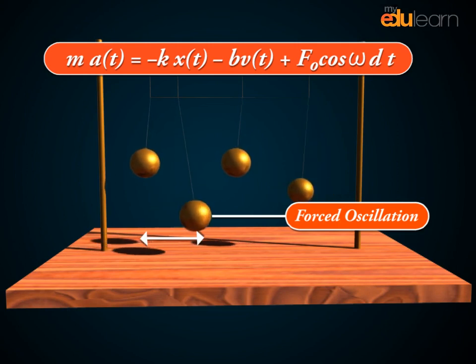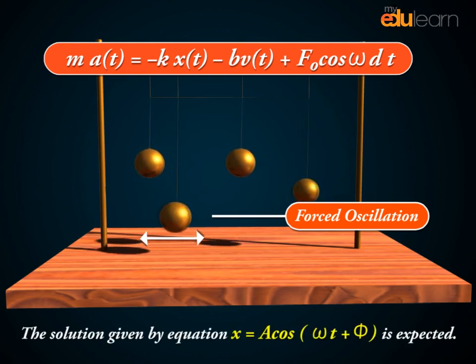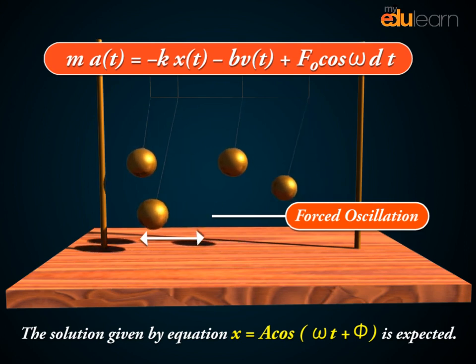One could argue that in steady state, the oscillator must physically have the same frequency as the driving force, and thus the solution given by equation X equals A cos omega t plus phi is expected.